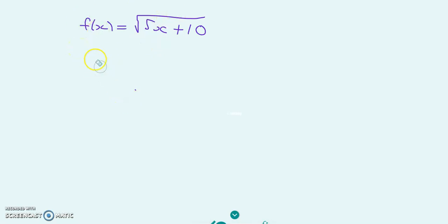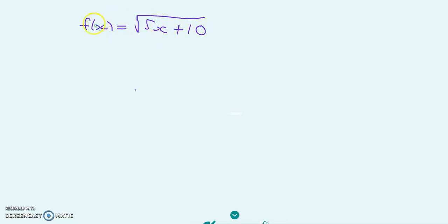The domain is the set of all possible x values that the function can take on — all the x values that the function can take on. So how do you define it?